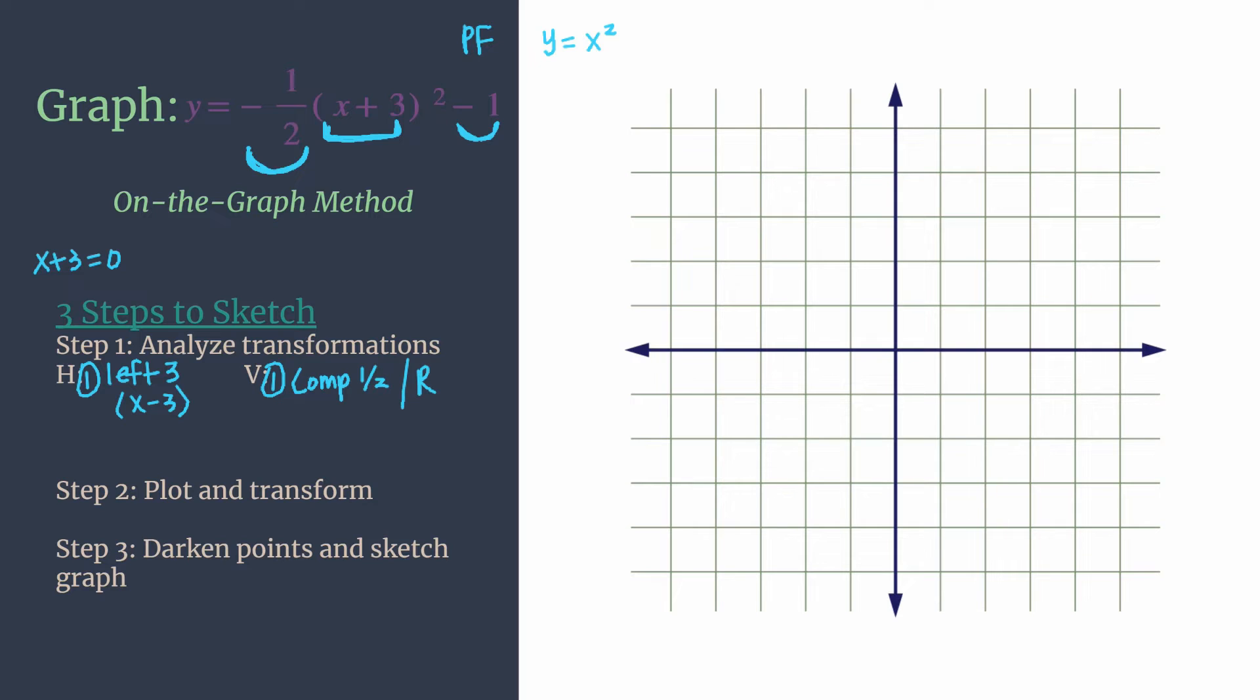All right, so let's note that reflection in shorthand, rx. And we know we are multiplying our y's times negative one half. That'll take care of both of those at the same time. It's a two for one. And then secondly, we know that minus one tells us that we should be moving down one unit or just subtracting one from our y's. So now we have our analysis and we're ready to move on to step two.